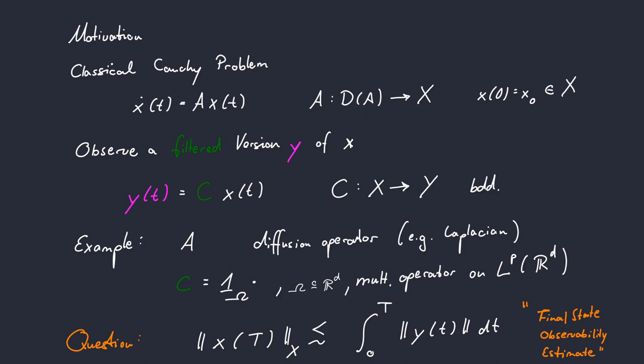So far, the governing components of our problem, namely the operator A and the observation operator C, they have been constant within time. And this is the next level of complexity that we want to add to our problem.